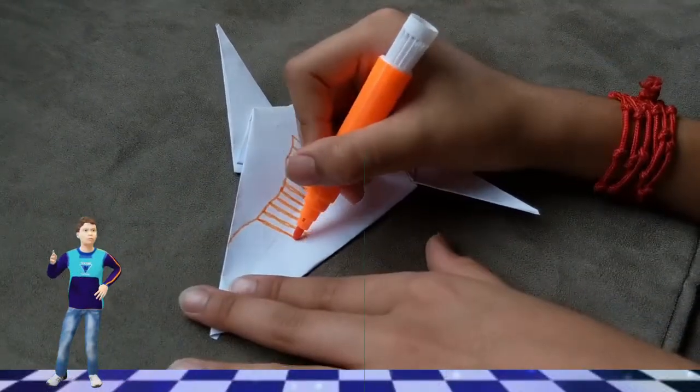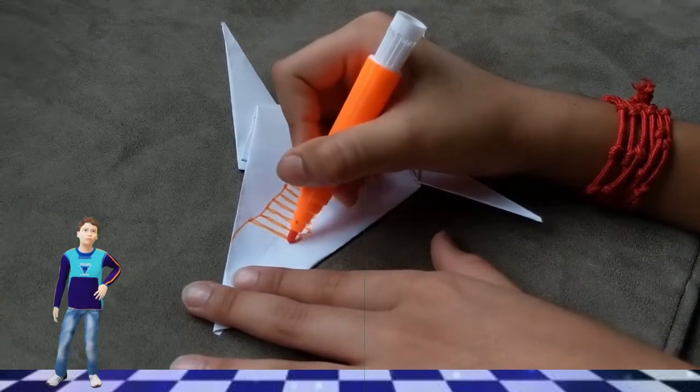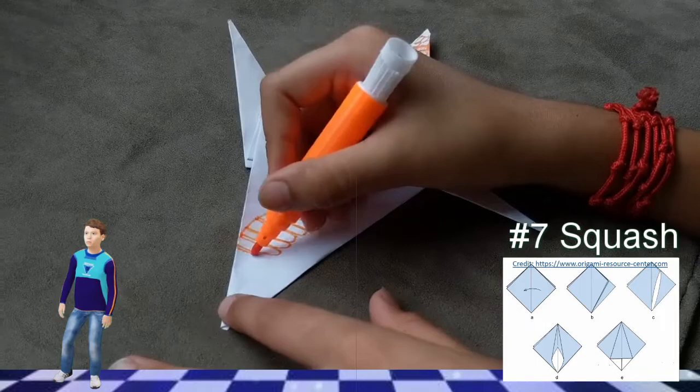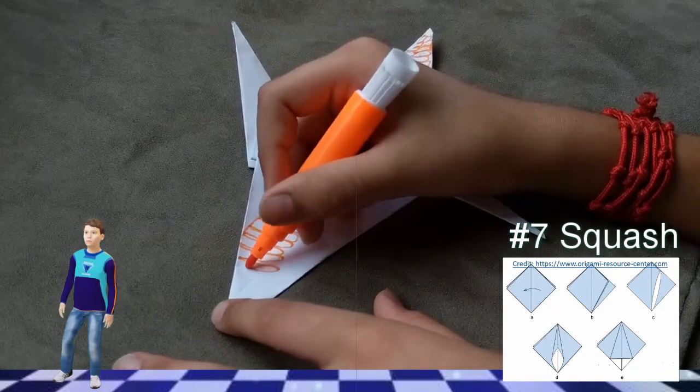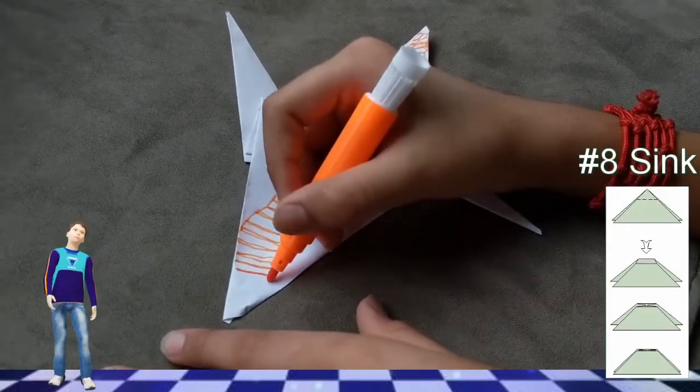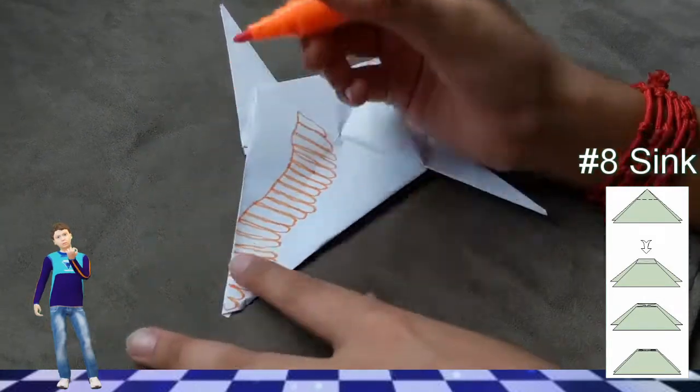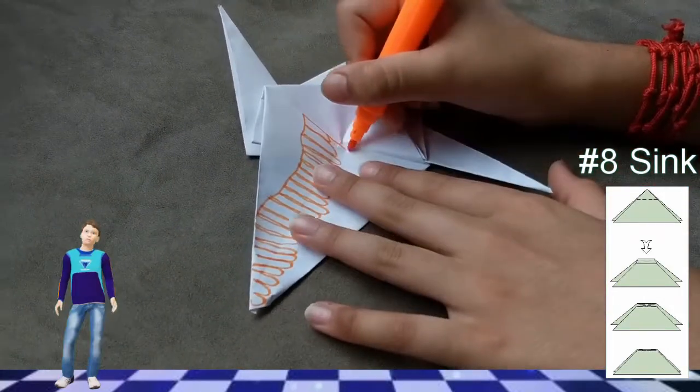The remaining basic origami foldings are the squash, the sink and the petal.